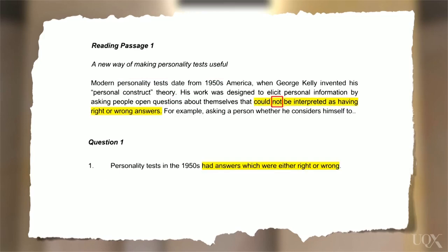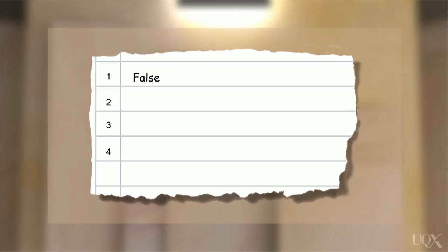Now we can go back to the question and compare it with the text in more detail. The statement says that the answers were either right or wrong, but the text says that the answers could not be interpreted in that way. So we can say that the answer is false, because this statement contradicts the information given in the text.